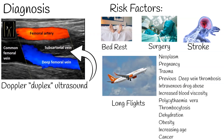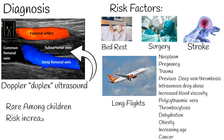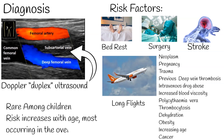Increased blood viscosity from conditions such as polycythemia vera, thrombocytosis, and dehydration also raise risk. Constitutional factors include obesity, increasing age, and cancer. Deep vein thrombosis is rare in children, and the risk increases with age, with most cases occurring in those over 40.